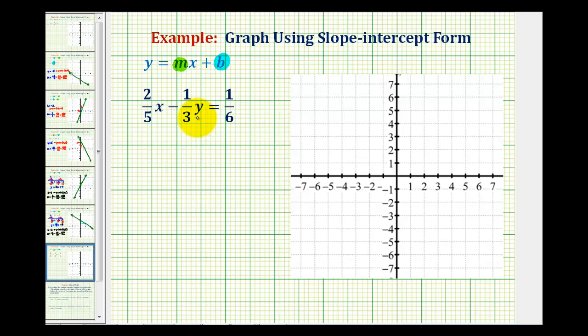But looking at our equation, we need to recognize that we're going to have to solve this equation for y in order to have this in slope intercept form. So what we're going to do is first subtract the x term on both sides of the equation. So we'll start by subtracting two-fifths x on both sides of the equation. This would be zero and then we'd have negative one-third y equals negative two-fifths x and then plus one-sixth.